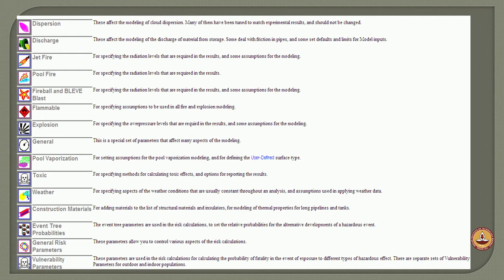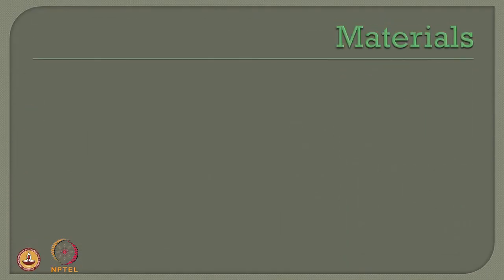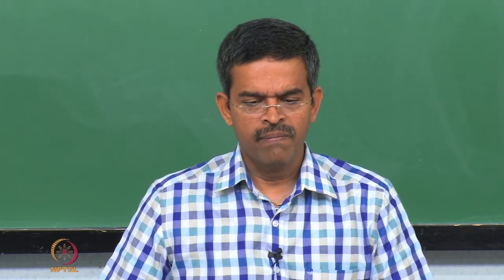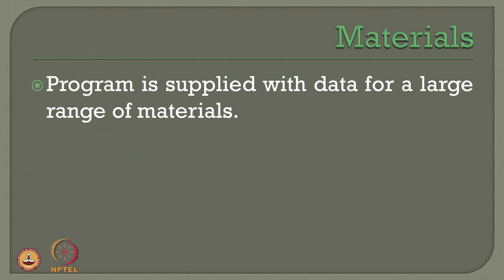Event probabilities can be used for risk calculations to set the relative probability for alternative development of hazardous events. General risk parameters allow control of various aspects of the risk calculation. Vulnerability parameters are used in risk calculation for computing the probability of fatality in the event of exposure to different types of hazardous effects, with separate sets for outdoor and indoor populations. Material inventory plays a very important role in risk assessment. The program is supplied with data for a large range of materials commonly used in oil and gas industries.